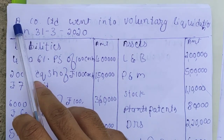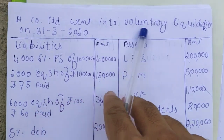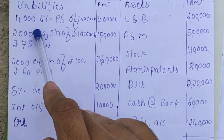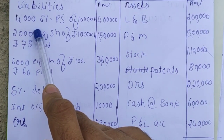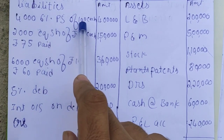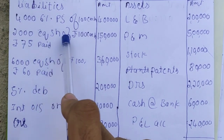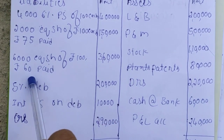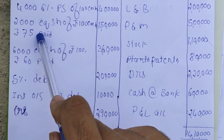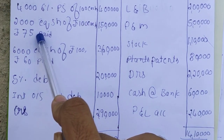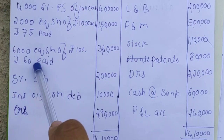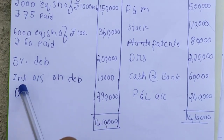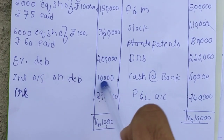Let us start the next sum on liquidation. A Limited went into voluntary liquidation on 31st March 2020. The balance sheet shows: 4,000 6% preference shares of Rs.100 each, fully paid up; 2,000 equity shares of Rs.100 each with Rs.75 paid up; and 6,000 equity shares of Rs.100 each with Rs.60 paid up. There are two kinds of equity shares. Next, 5% debentures.